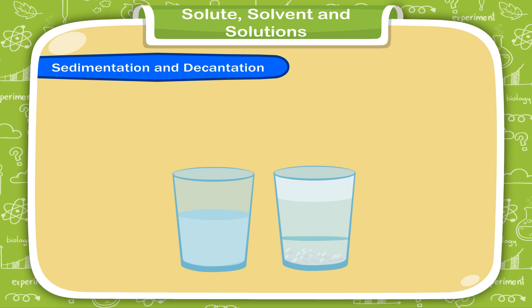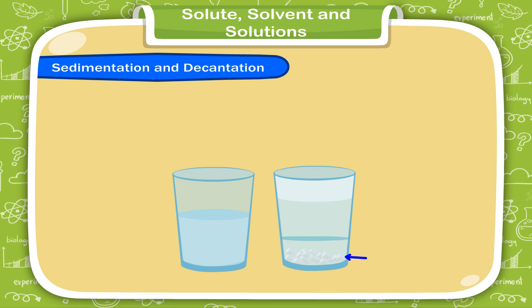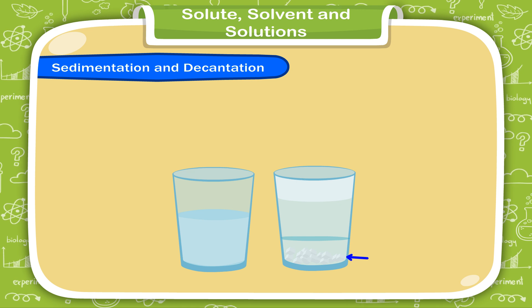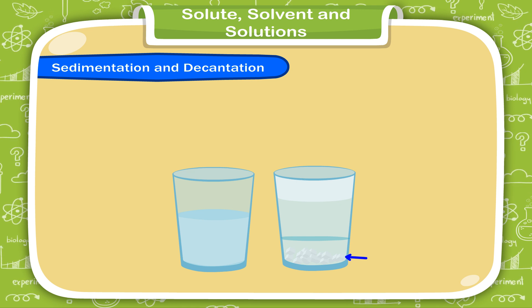The insoluble impurities settle at the bottom of the first glass, as sediment. This process of pouring water is called decantation.